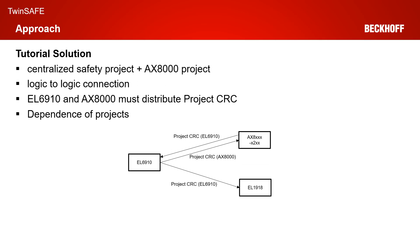If you look at today's tutorial solution, we still have a centralized EL6910 safety project, but the EL6910 is talking to an AX8000, and that AX8000 has its own safety project and its own safety project CRC. So in this case, we have a logic-to-logic connection. For the backup and restore mode, the EL6910 and the AX8000 must distribute their project CRC. We have a dependence of the safety project and we need to configure the backup and restore mode for this dependence, but this can be done very easily within TwinCAT 3.